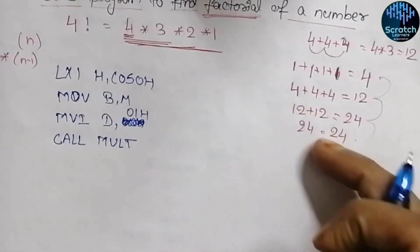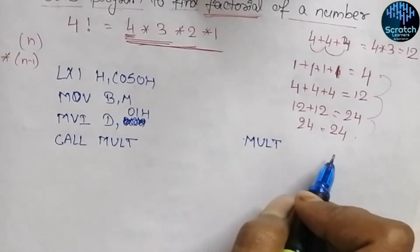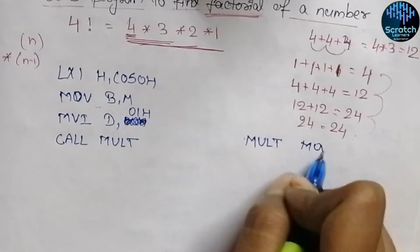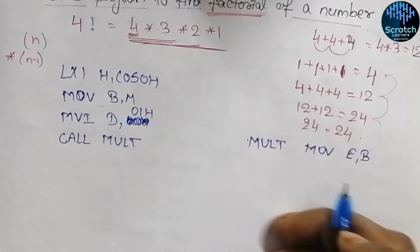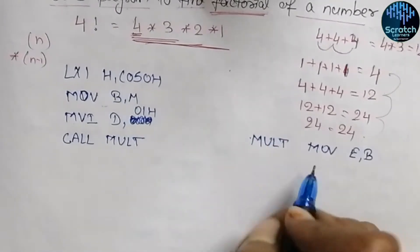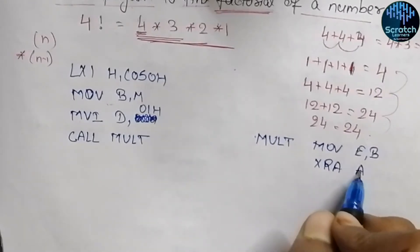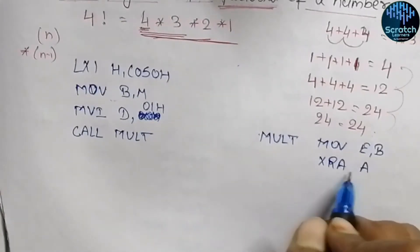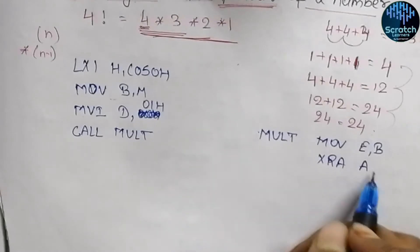In the subroutine, first we move the content of B into register E using MOV E,B to store it. Then we clear the accumulator — this can be done two ways: using MVI, or by performing XOR A, which XORs the accumulator with itself, clearing all its content to zero. Then we add the content of register D to the accumulator using ADD D.